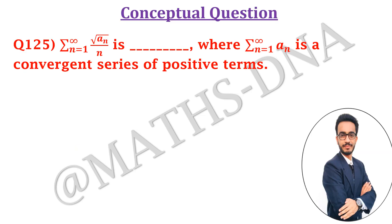The question is: summation n running from 1 to infinity, under root a_n upon n is dash, where summation n running from 1 to infinity a_n is a convergent series of positive terms.